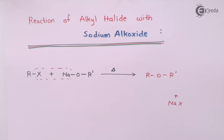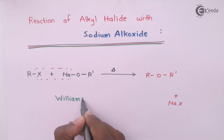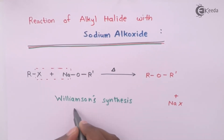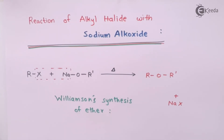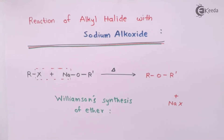This reaction that forms ether is basically known as Williamson synthesis of ether. Because of this, we could be able to form various kinds of ethers. Ethers can be simple ether as well as complex or mixed ether. Let me give examples of both and we will find out how to tackle this kind of question.